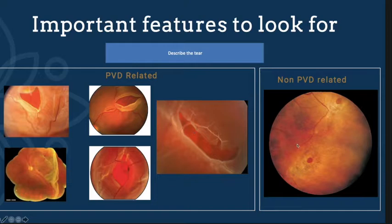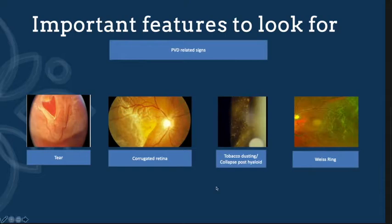Sometimes a lattice can also cause a non-PVD-related tear. In these circumstances, what you see is not a horseshoe tear but a hole within the lattice itself. This is one of the features you can look for to determine whether the patient has PVD or no PVD. Other PVD-related signs include highly corrugated retina, presence of tobacco dusting, and a collapsed posterior hyaloid behind the lens. Another feature is the Y-streak.